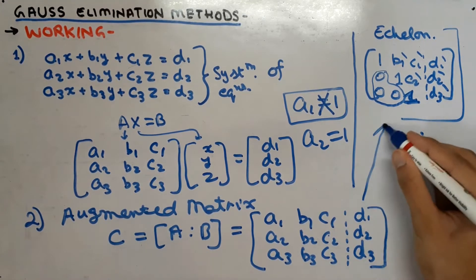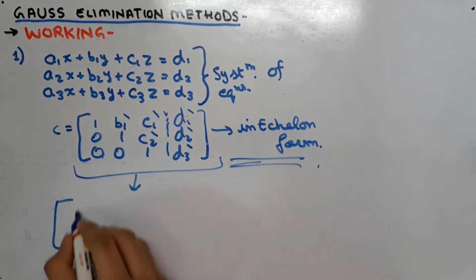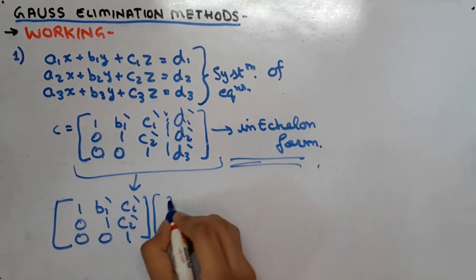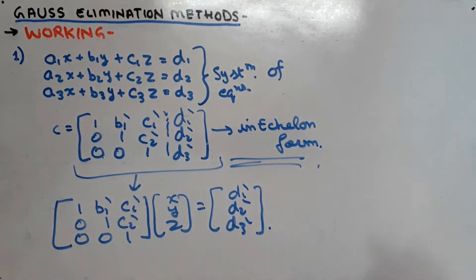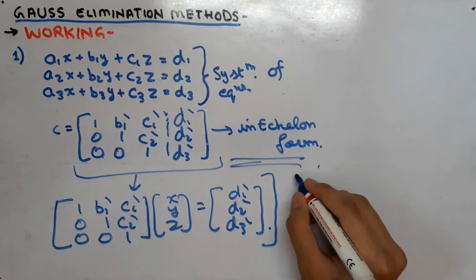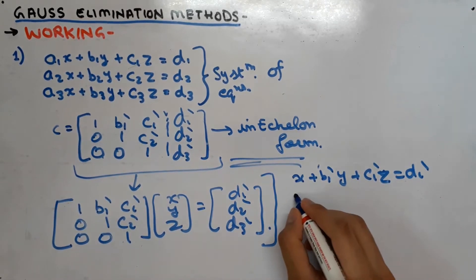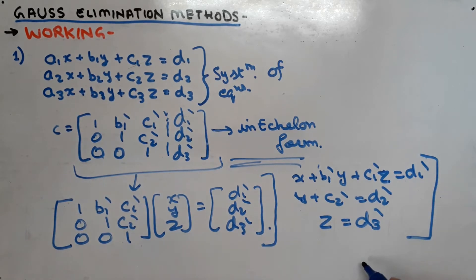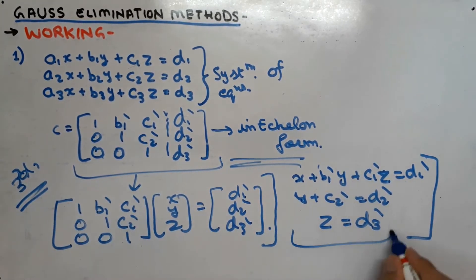We have to convert matrix C into echelon form. Once we have the augmented matrix in echelon form, we write it as linear equations: the first equation is x + b1' y + c1' z = d1', then y + c2' = d2', and lastly z = d3'. This is our third step, and finding the values of x, y, and z is our fourth step.